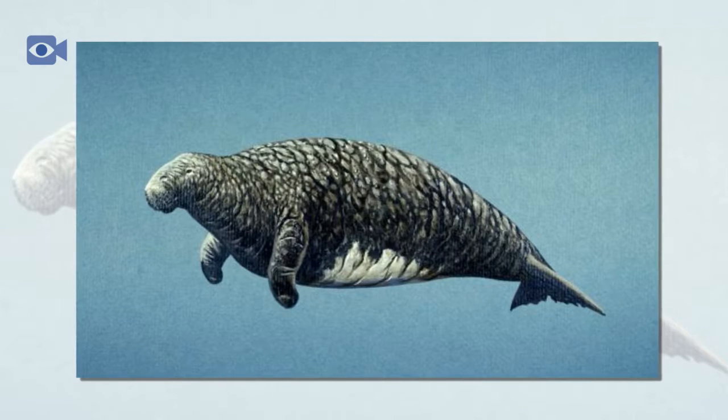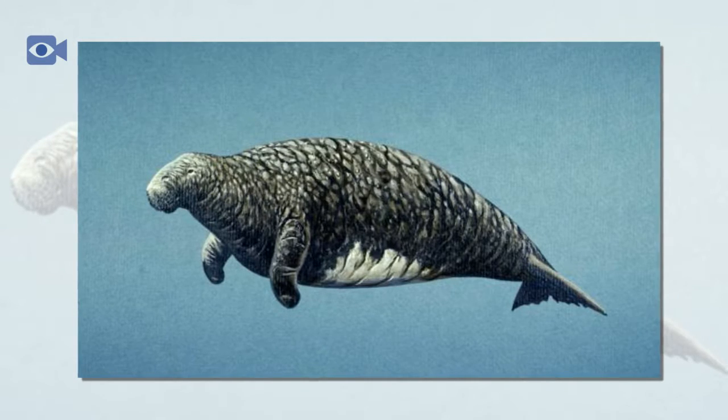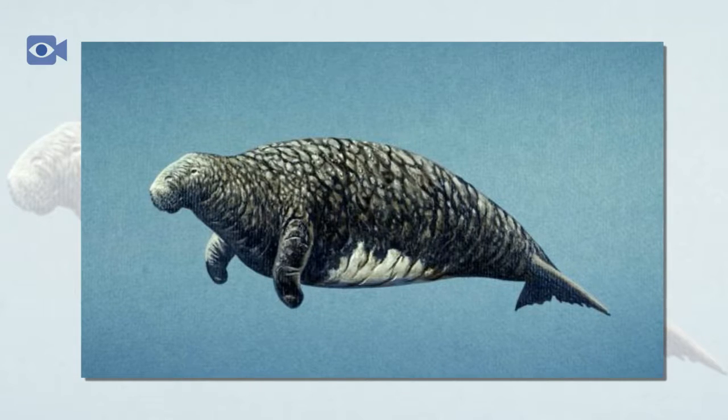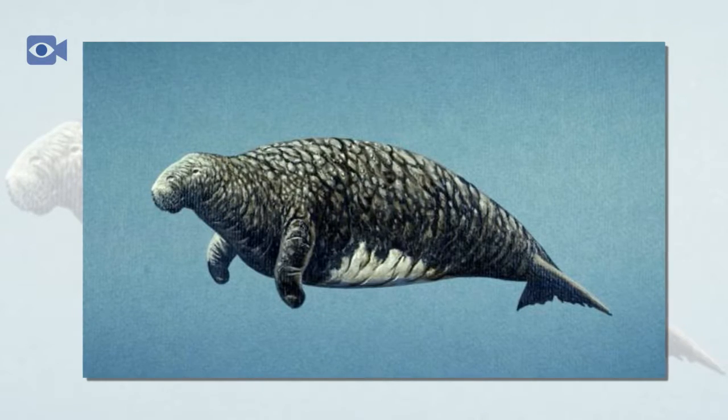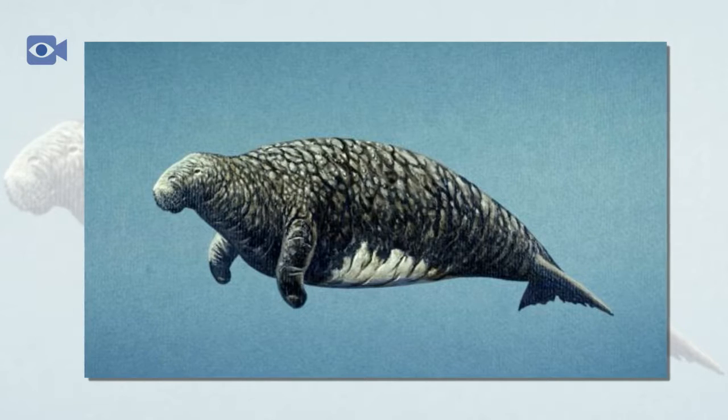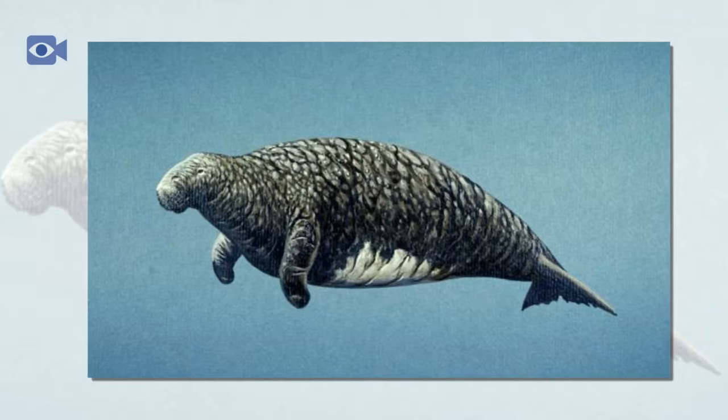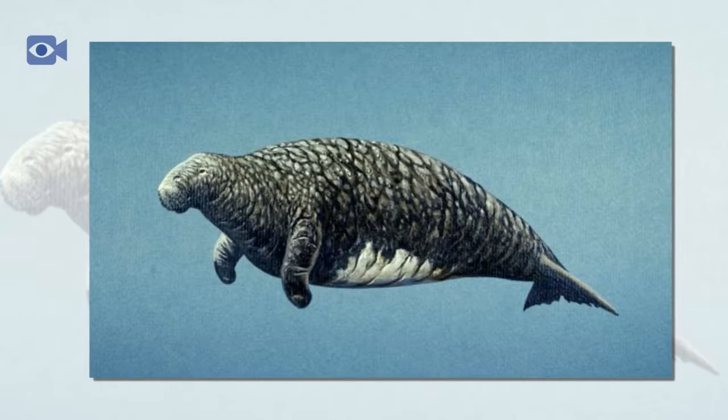The Steller's sea cow was a herbivorous animal that would have had a very similar diet to the dugong and manatees still extant today. This toothless animal would have spent the majority of its time grazing on kelp, seaweed, and other aquatic grasses that grow in the shallows of the oceans.